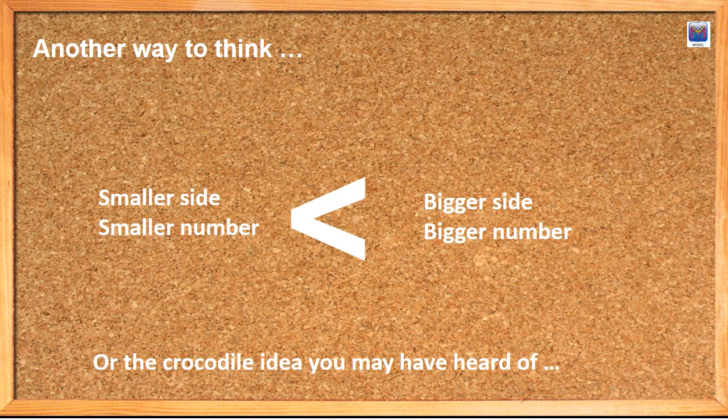Another way to think about it is here's our greater than and less than sign in the middle here. This is like the smaller side of the symbol. This is the larger side. So the bigger number goes on this side, the smaller number goes on this side.